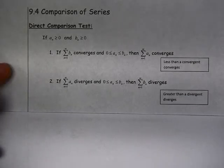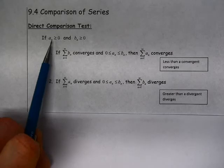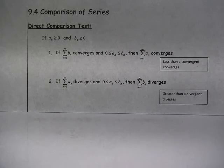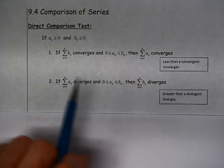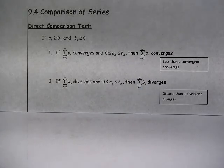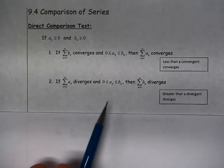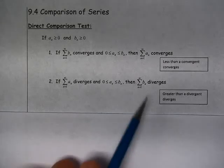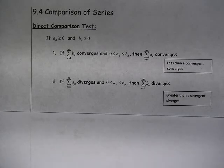In section 9.4 we're going to discuss comparison of series. The first test we're going to learn is called the Direct Comparison Test. It's defined as follows: if I have one series whose terms are defined as a_n and another series whose terms are defined as b_n, and all those terms are positive, and the series with b_n converges, and each term in a is less than the terms in b, then the series involving a also converges. Anything less than a convergent series is also going to converge.